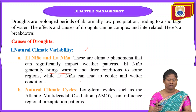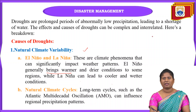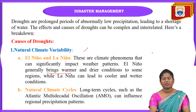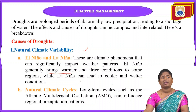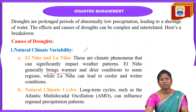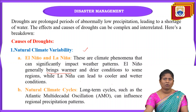The next cause is natural climate cycles. Long-term cycles such as the Atlantic Multi-Decadal Oscillation can also influence climatic conditions. In some regions, because of this oscillation, there will be no precipitation, which is also one of the causes of droughts.